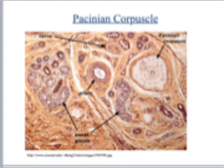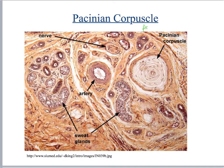Here's a slide of a Pacinian corpuscle. This is actually from skin — I can confirm that because I can see sweat glands, and there are no sweat glands in the pancreas. Here you can see the rings of the Pacinian corpuscle. Do not get this confused with an osteon in bone — it's not. It's a Pacinian corpuscle.